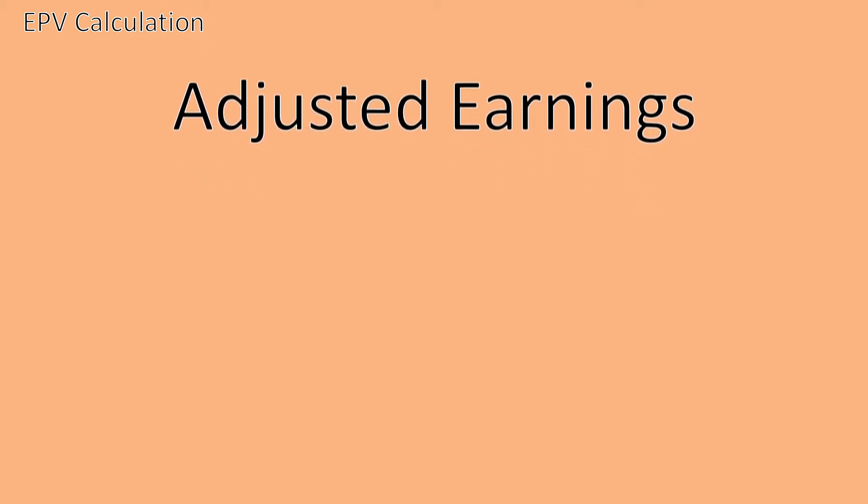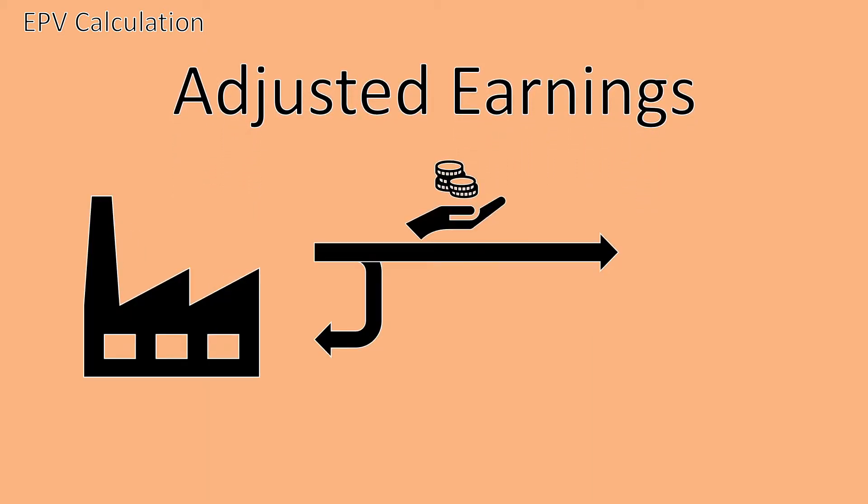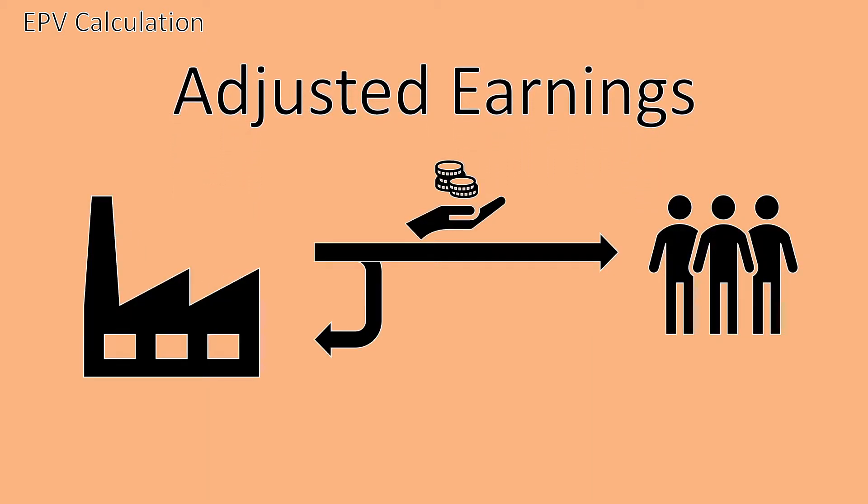But why do we adjust the earnings and for what do we adjust them? We go through this process to come up with our best estimate of what the owners could extract out of the company while still being able to operate the business like the year before. This means we adjust our earnings for all influences that are connected to growth. Also, due to us assuming that the earnings don't change, we want earnings to represent a normal year.